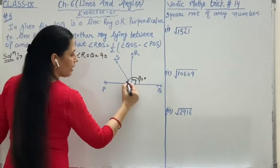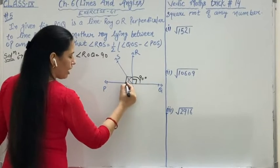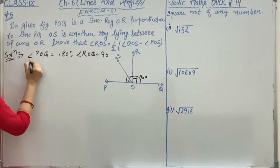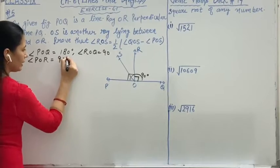That means the total angle is 180, half is 90. So the remaining half is also 90 degrees. That means angle POR is equal to 90 degrees.